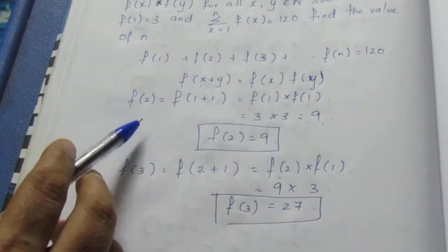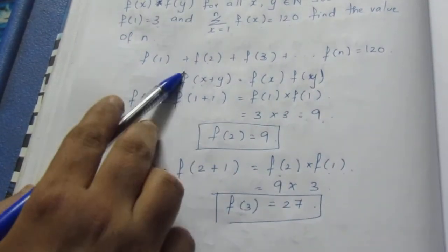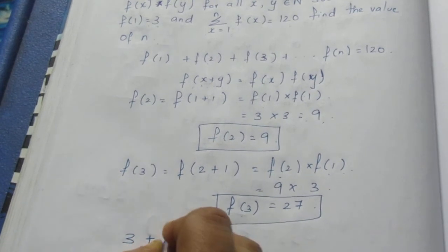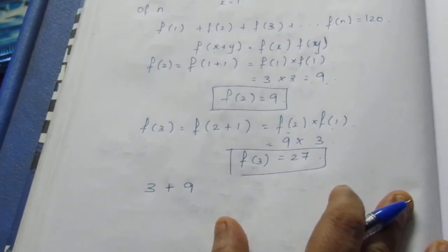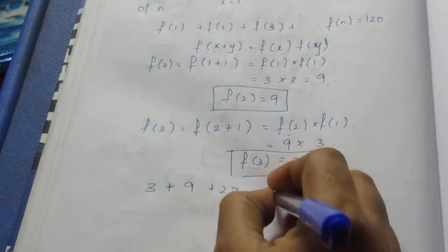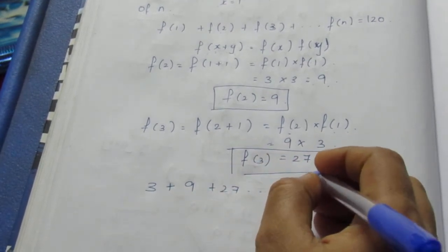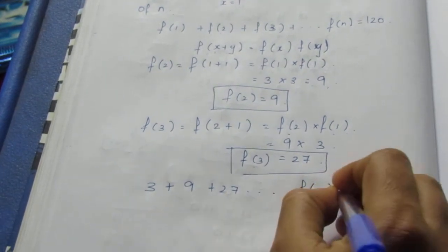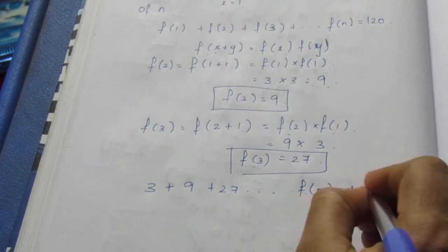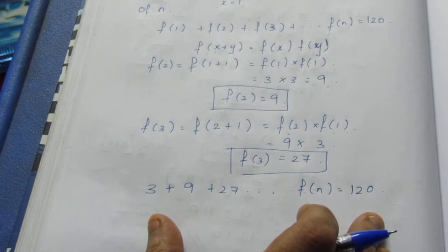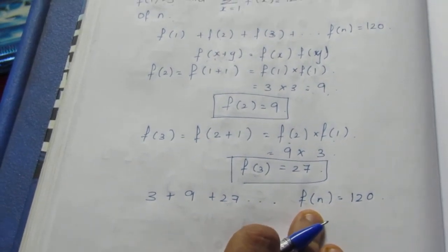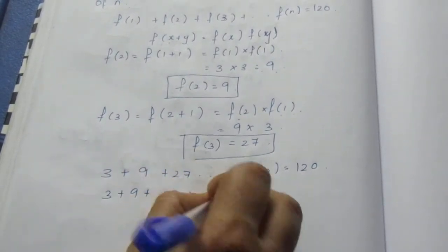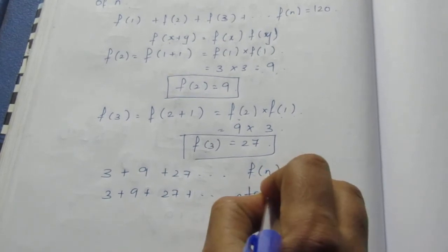So we know f(1), f(2), and f(3); we'll substitute in the formula. This becomes 3 plus 9 plus 27 up to f(n) equals 120. Since f(n) represents n terms, we have 3 plus 9 plus 27 up to n terms equals 120.